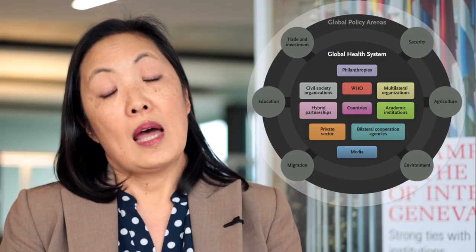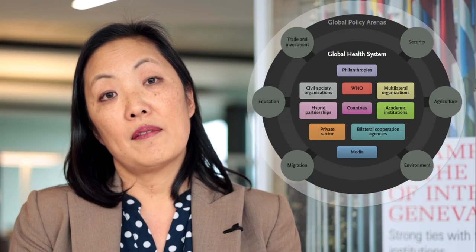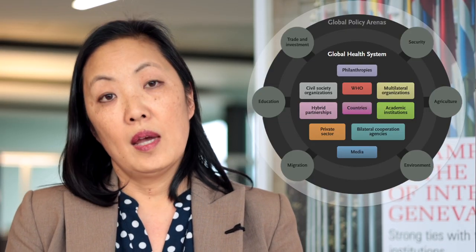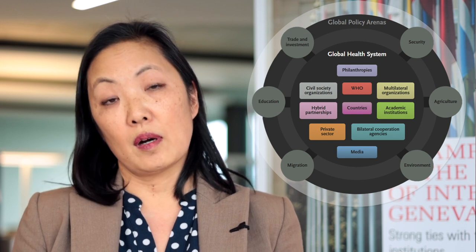Media and journalists, and lots of other actors, are influential in processes of global governance. This raises new questions about who should have legitimacy in such a system, where authority comes from, and what the power dynamics are. Now, I'm putting up here an image of the global health system, sometimes referred to as the global health architecture.